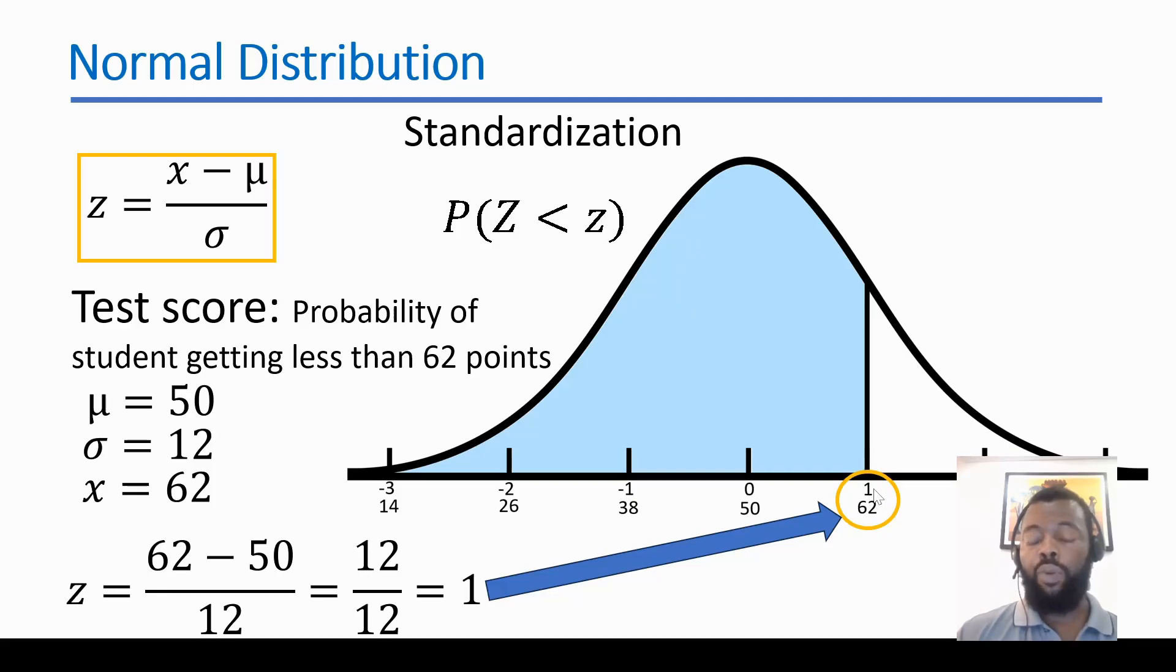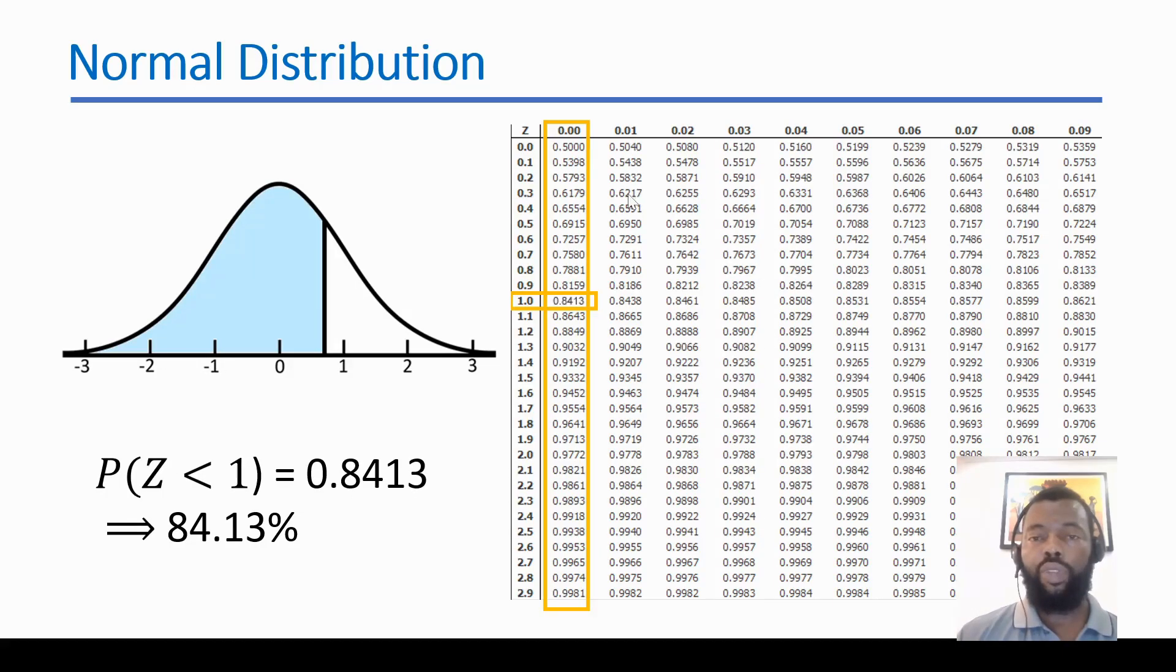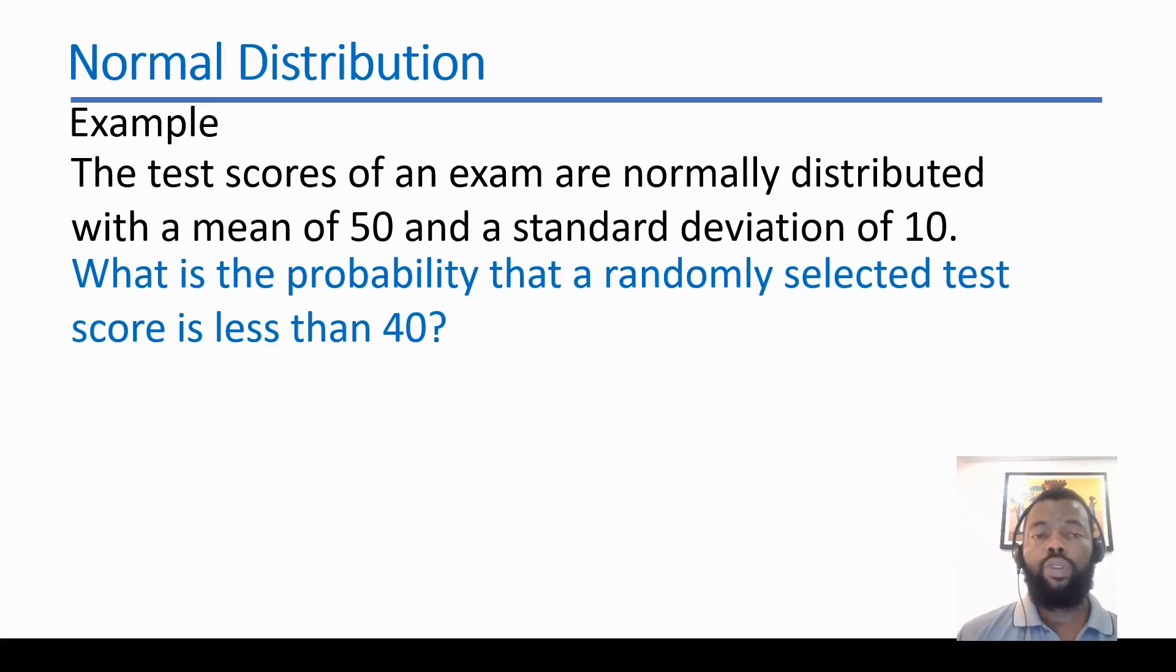How to get this area? With this number, we can go to the normal distribution table and get this area. Here we have a normal distribution table. In the first column we have 1. So 1 gives us this number, 0.8413. In percentage this area corresponds to 84.13%.